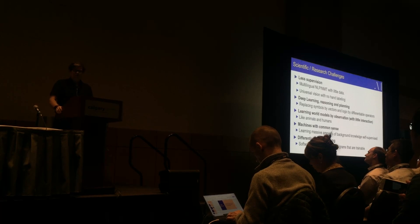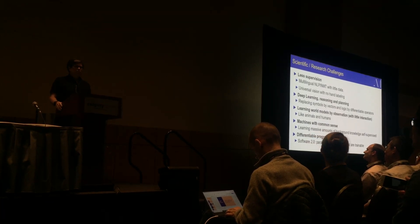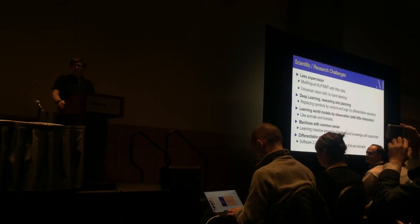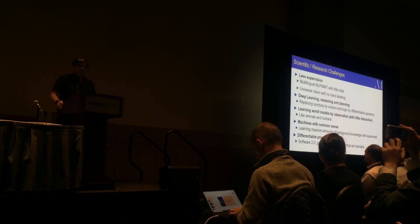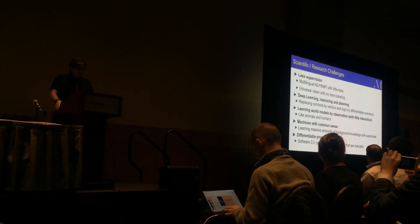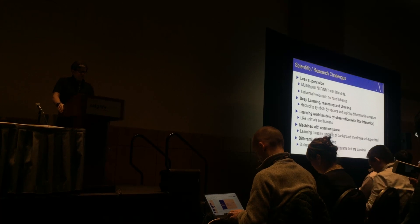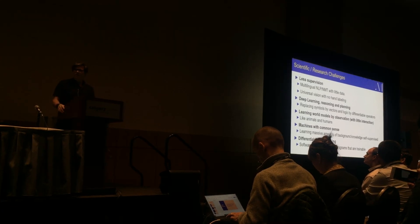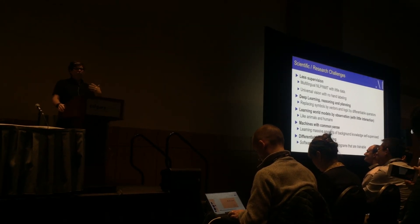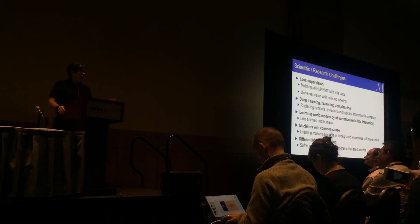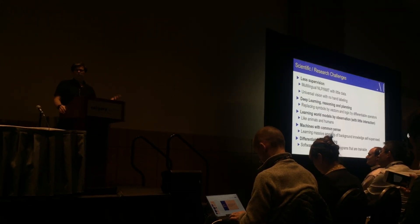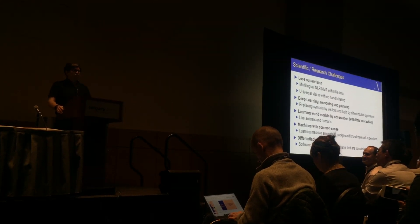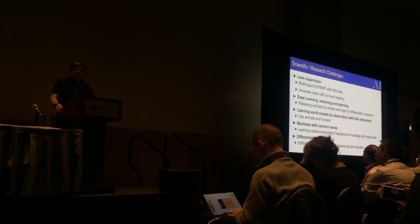We need to do what good old-fashioned AI was doing in terms of reasoning, except we need to replace symbols with vectors and replace logic with differentiable operators so we can put them in a deep learning system and train them. Machines need the ability to learn how the world works by observing — that's the most efficient way humans and animals learn massive amounts of knowledge. Generative networks and other methods are very promising in that direction.